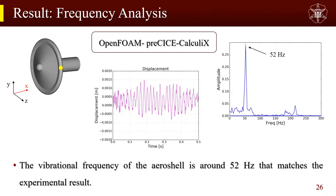For the frequency analysis of vibration: the graph in the middle shows the time history of displacement in the x-direction at a specific point on the aeroshell. The aeroshell shakes with different amplitudes, indicating that the fluid and structure are moving together rather than the structure itself vibrating independently. This behavior can be seen in the experimental movie. The frequency analysis by fast Fourier transform confirms that the aeroshell is vibrating at a frequency around 52 Hz.